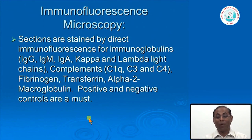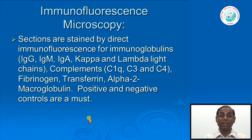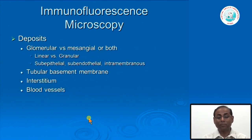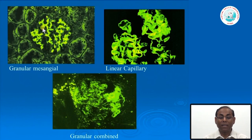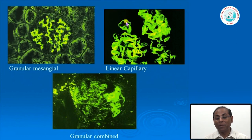Sometimes fibrinogen is tested, particularly if there is acute inflammation in the glomerulus. After detecting immune complex deposits, we characterize where they are deposited in the glomerulus and their pattern—whether linear or granular, and whether in the tubular basement membrane as well. Examples include bright greenish-yellow granular deposits and linear deposits in the glomerular and capillary basement membrane, as well as combined blotchy and granular patterns.